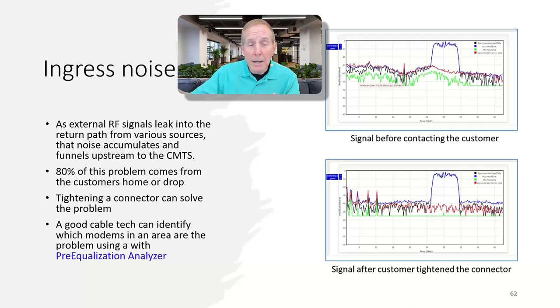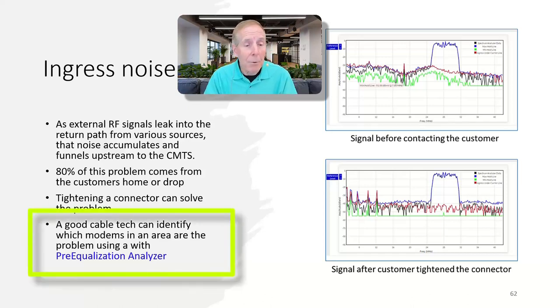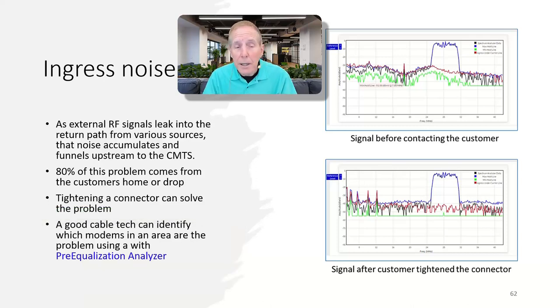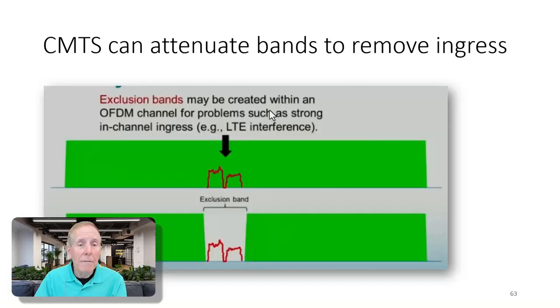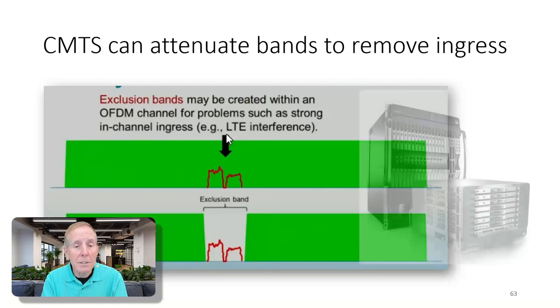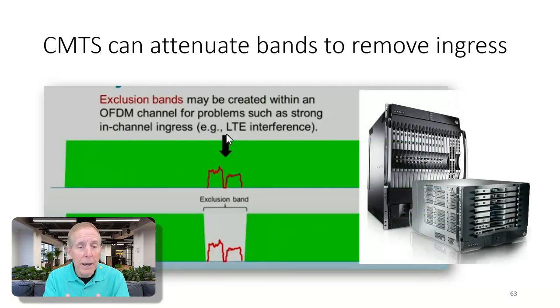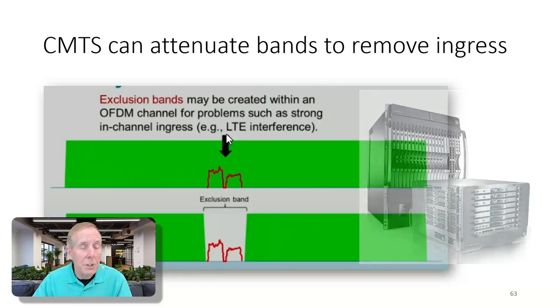Here's the problem - it could be a neighbor or someone else in your neighborhood that's allowing ingress noise. If that happens, a cable tech can use a pre-equalization analyzer to determine which customer is the problem. Here we have an example of LTE cellular coming into the cable system. What CMTS does is it actually excludes that band so that it's not interfering with the rest of the system.